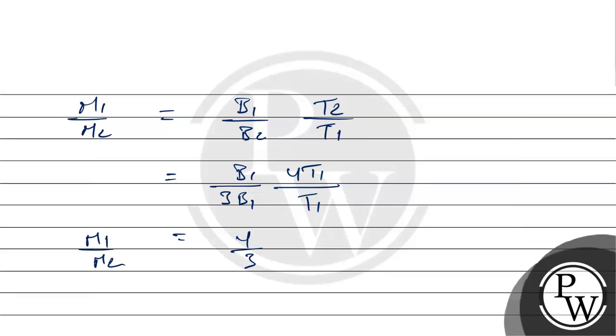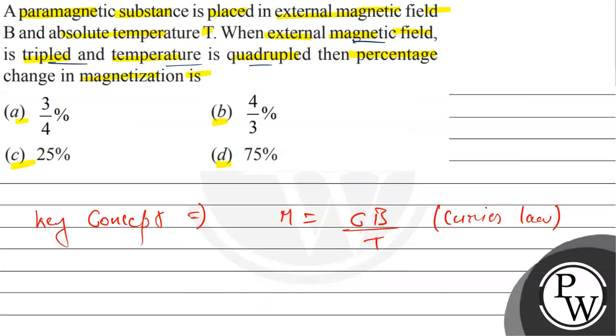It is M1 by M2. And if we convert it to percentage, it means 4 by 3 percentage. So what is our answer? 4 by 3 percentage, option B. So this is our right answer. Hope you understood it well, thank you.